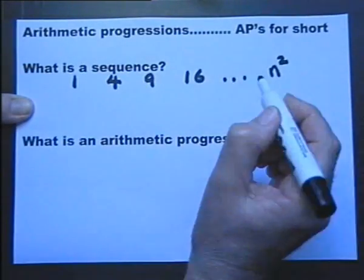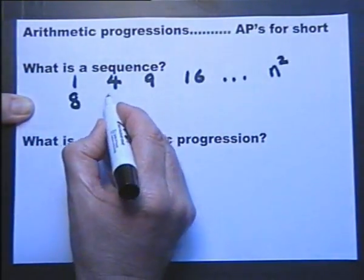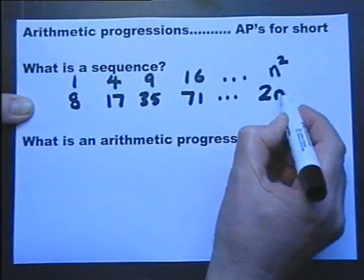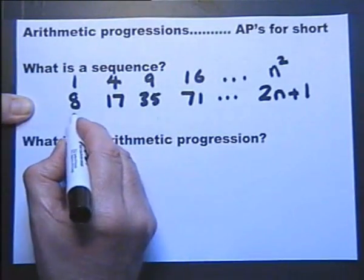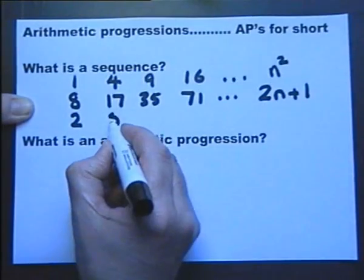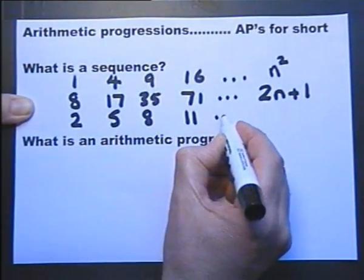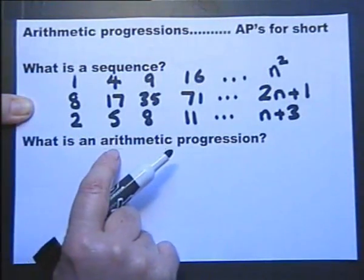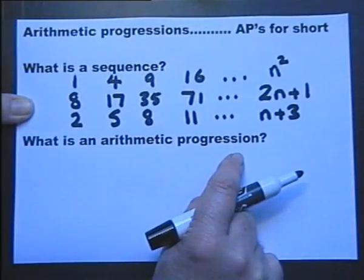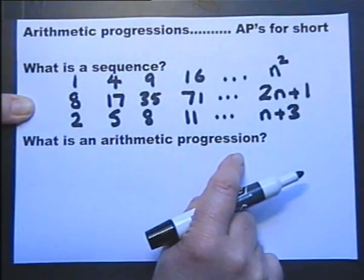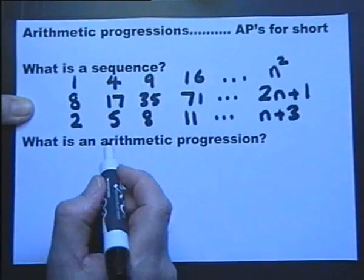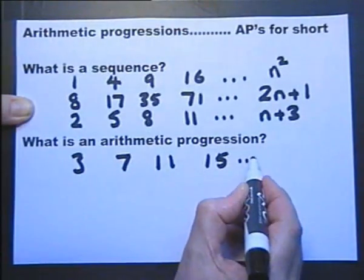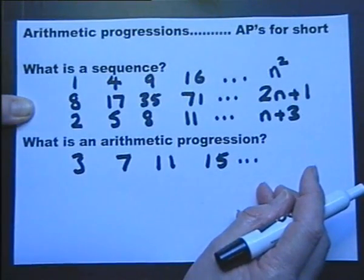Another sequence would be to start with a number, double it and add one, double it and add one, double it and add one. Or we could simply add a number on each time — for example, add on three each time. All of these are examples of sequences, but the last one is an example of an arithmetic progression, because an arithmetic progression is when you add a constant term between successive terms.